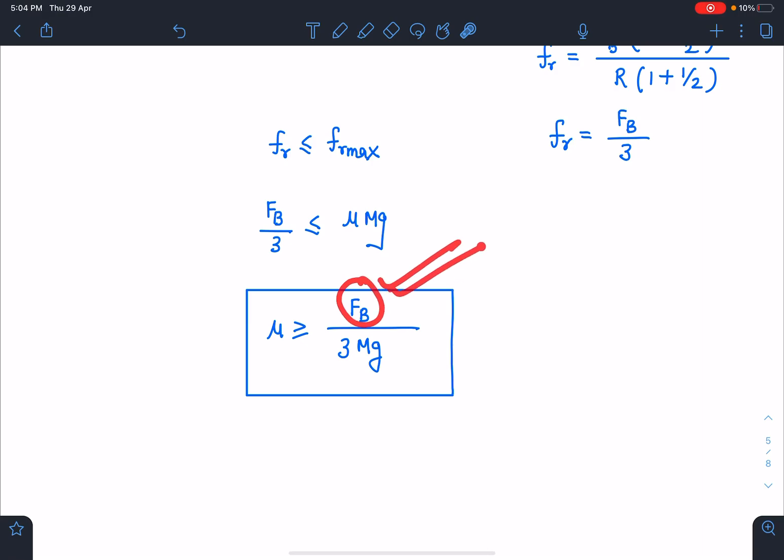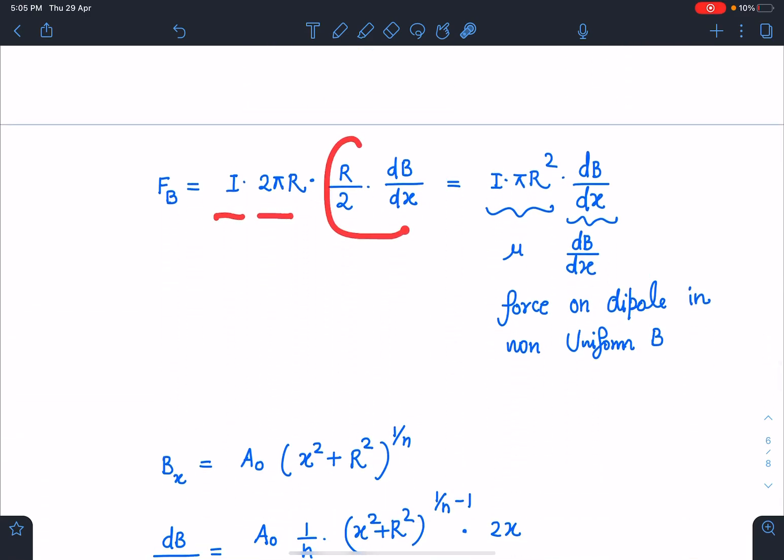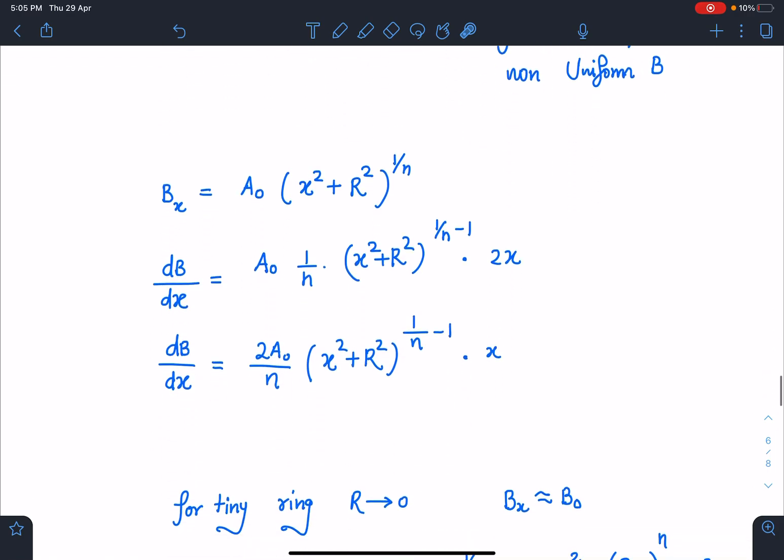So in the end, somehow I have to find this magnetic force which I have already calculated. It was i times Bᵣ into 2πr, and Bᵣ we have calculated as r/2 dB/dx. So if I substitute i·2πr·r/2 dB/dx, this is the Bᵣ. So you will see 2 and 2 gets cancelled, it comes as iπr² dB/dx. So guys, you could treat this ring as a dipole also and you can write force on dipole in non-uniform B, it gives the same expression. But I think I have given you one more way of solving for B radial.